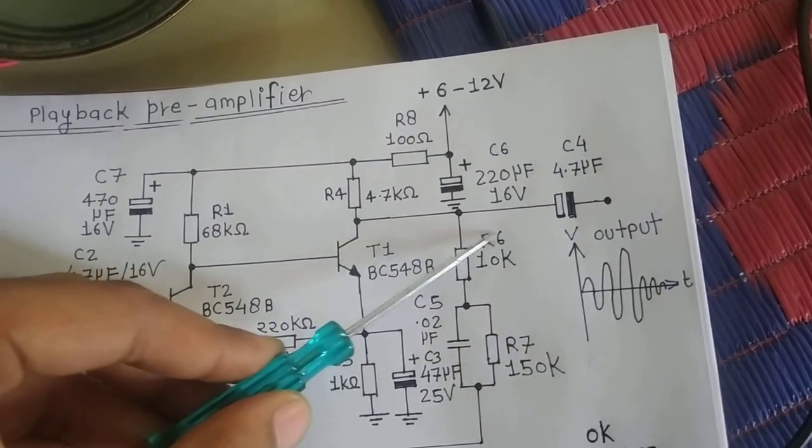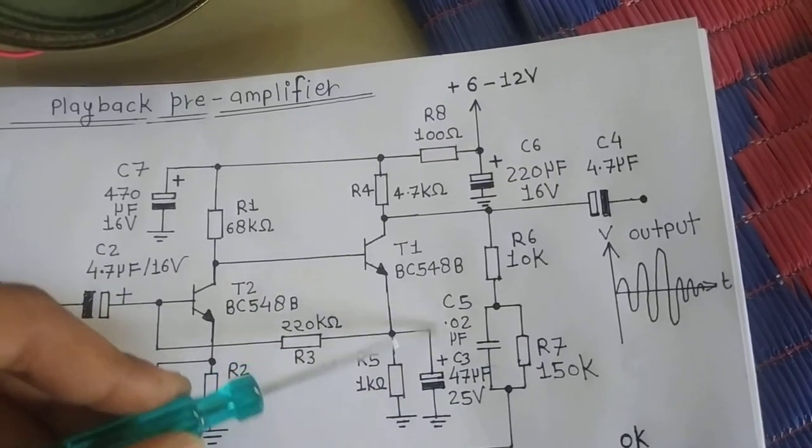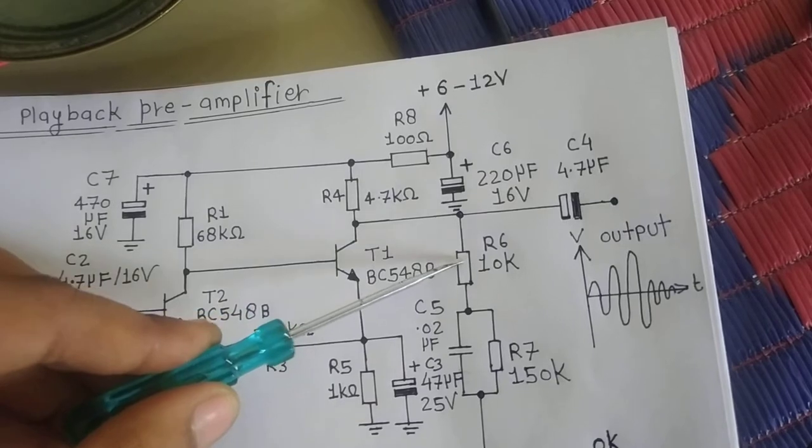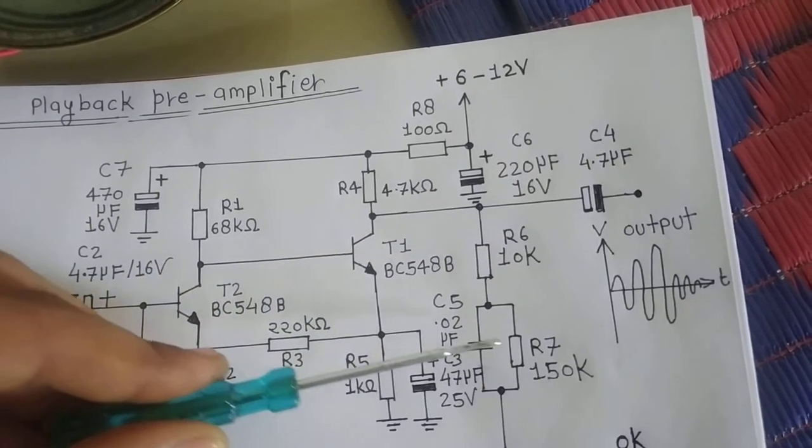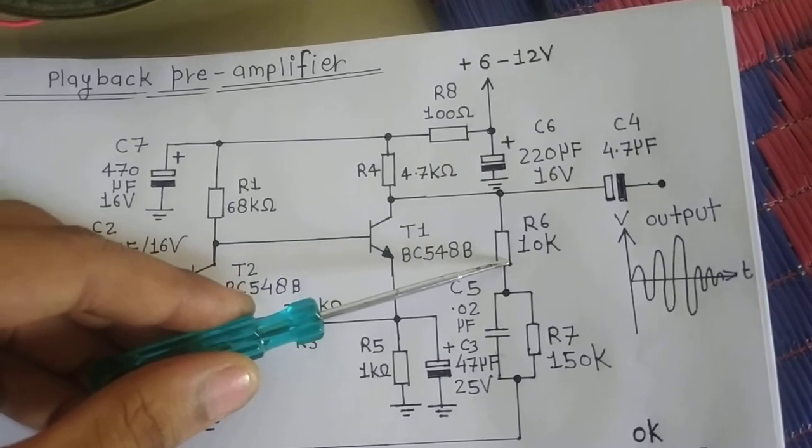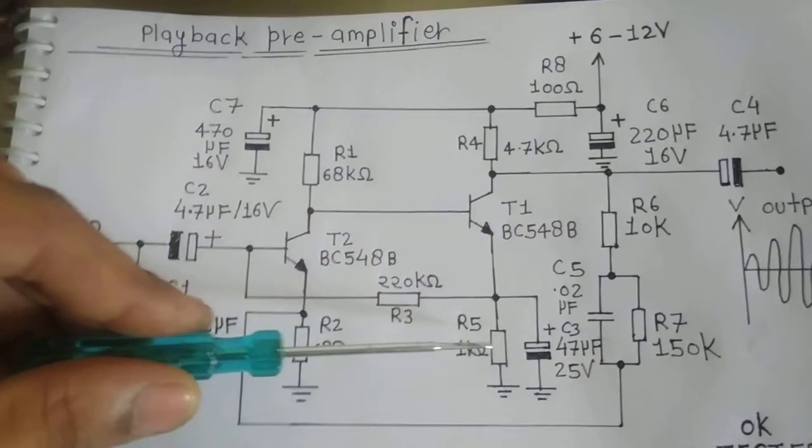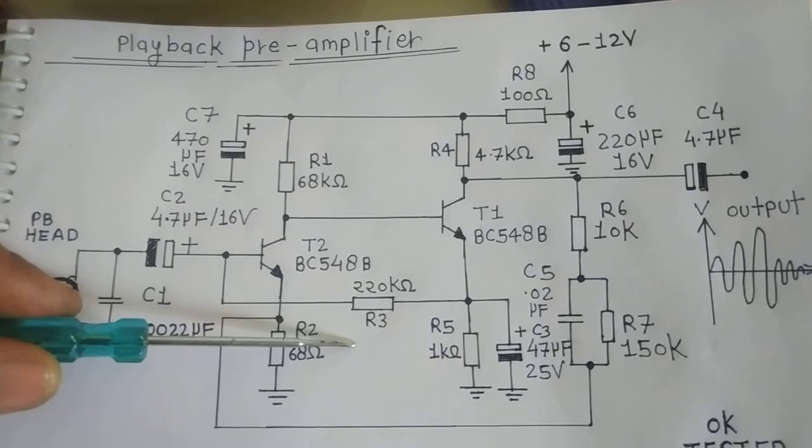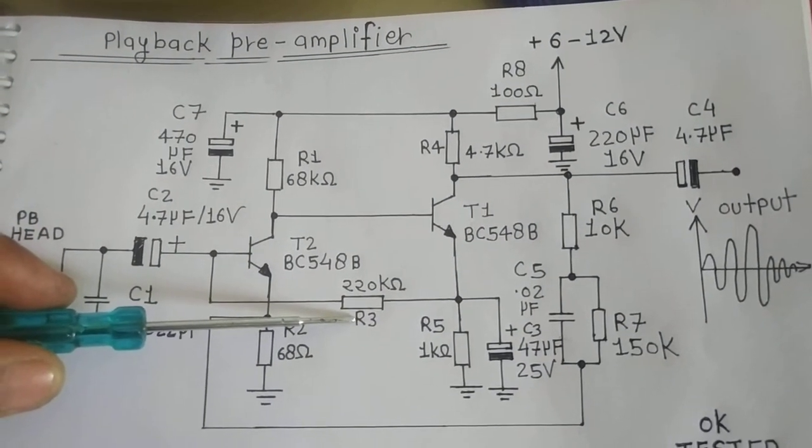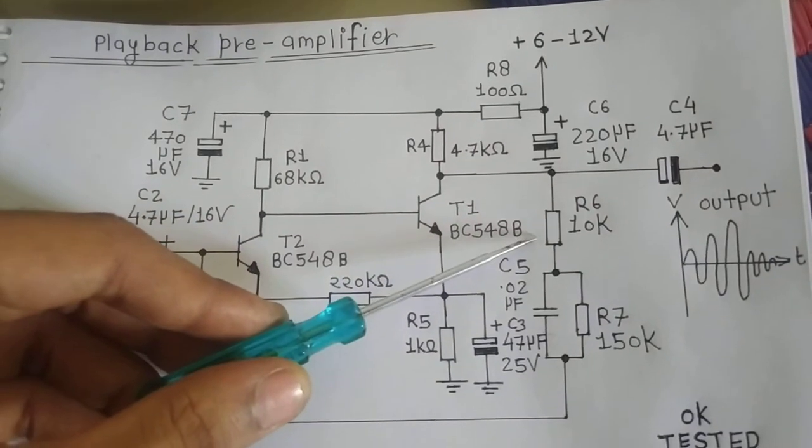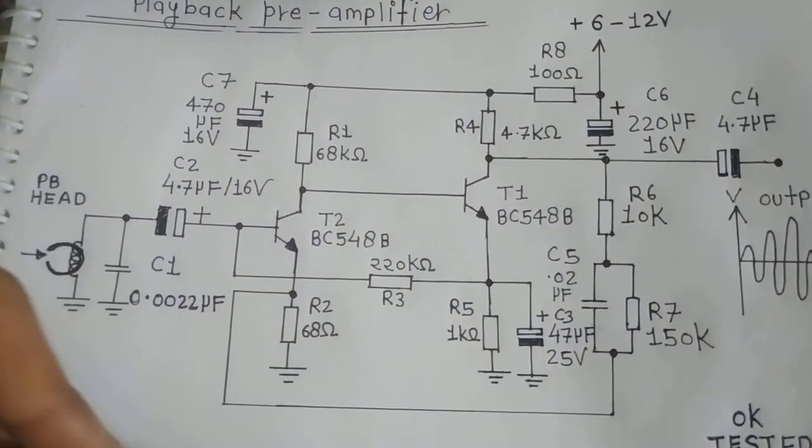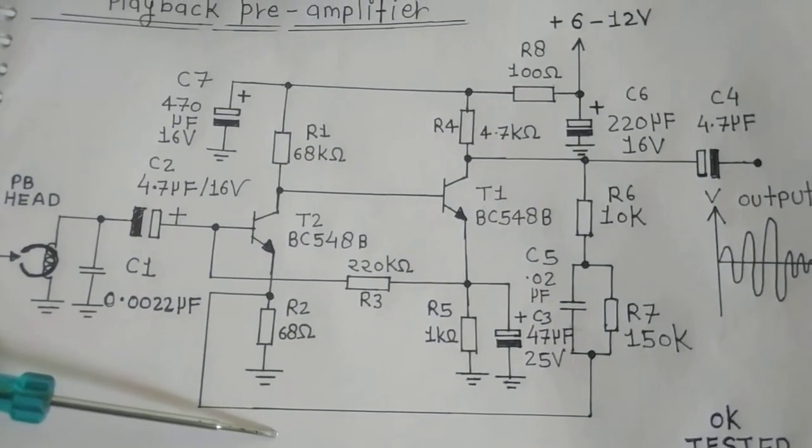This network is called a NAB network. This resistor and capacitor form a NAB equalizer. NAB stands for National Association of Broadcasters, which is an equalization that is used for recording and playback.